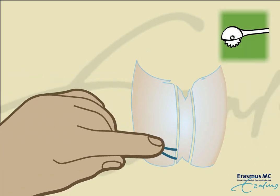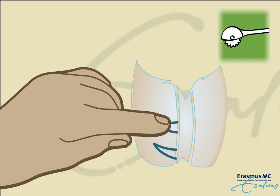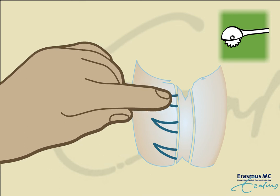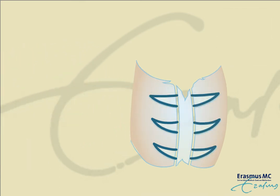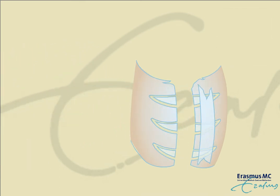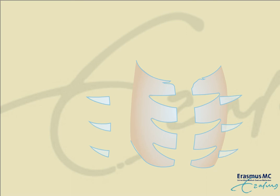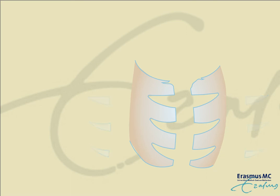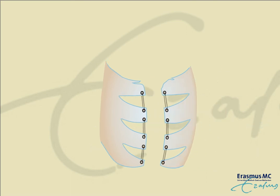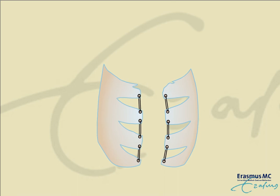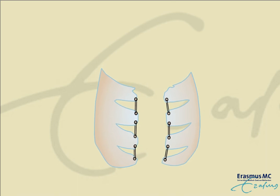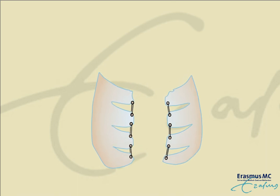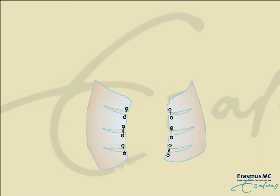To improve the curvature of the bone on the sides of the skull, wedges are cut out of the upper border of the bone pieces. The edges are then bent towards each other and fixed with resorbable sutures.